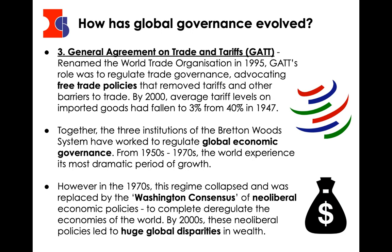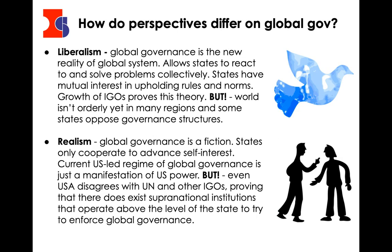There are different political perspectives on global governance. Liberals believe that global governance is the new reality of the global system — it's how states should interact to solve problems. They argue it's a good thing: we should have more rules to stop anarchy, and states have a mutual interest in upholding rules. The USA agrees to curtail some of its power in these organisations because it creates a better world. And if you look at the growth of IGOs over the past 50 years, that would kind of prove this theory correct.